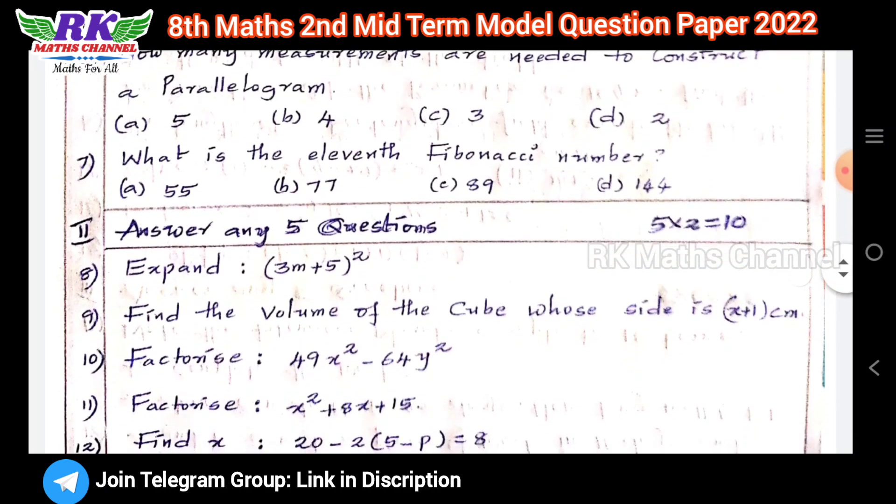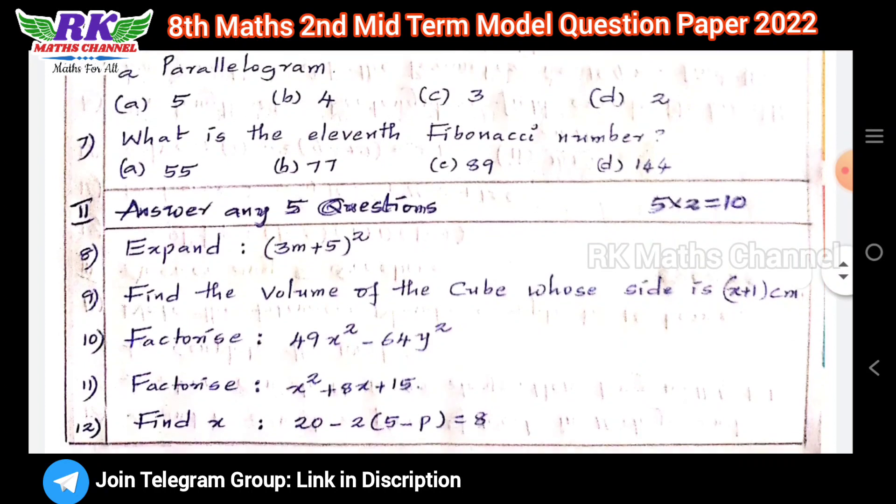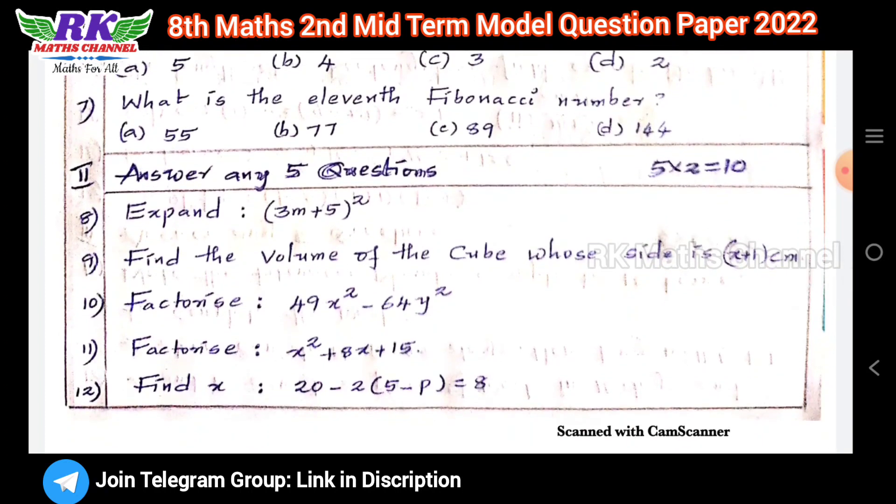Question number 8: expand (3m+5) whole square, that means use (a+b) whole square formula. Question number 9: find the volume of the cube whose side is (x+1) centimeter, use (a+b) whole cube formula. Next, factorize 14x² - 64y² using x² - y² formula which is (x+y)(x-y).